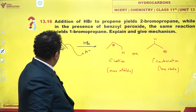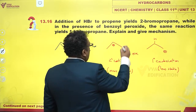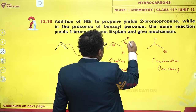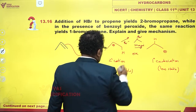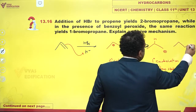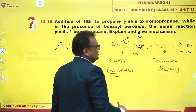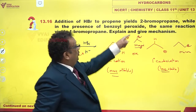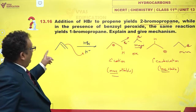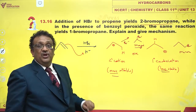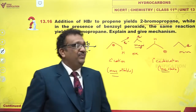So what happens is in step 2, if you add Br⁻, I get 2-bromopropane as the major product. Why? Because the secondary carbocation is more stable. And I will get 1-bromopropane as the minor product because the primary carbocation is less stable. This is the reason for obtaining 2-bromopropane.